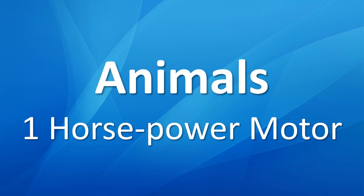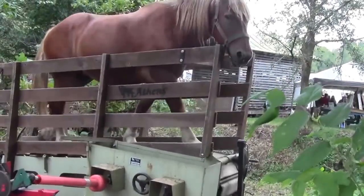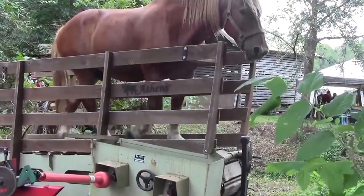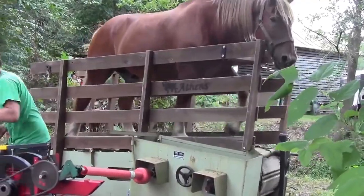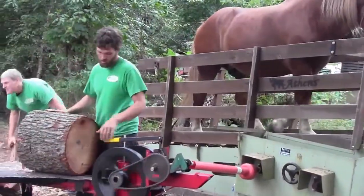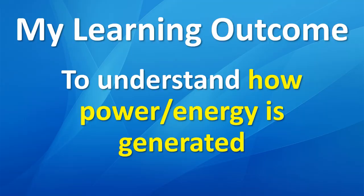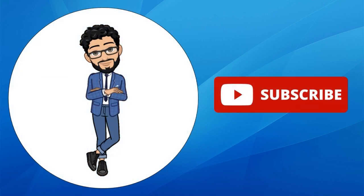You can also use animals to produce energy — for example, here is a one-horsepower motor used as a log splitter. I hope you've enjoyed that lesson. We set out to explain how energy is generated, we looked at energy resources, and I think we did a pretty good job covering all of that. If you liked what you saw, please support the channel by clicking subscribe, and if you want me to cover other lessons in the future, just leave them in the comments. Thanks for watching.